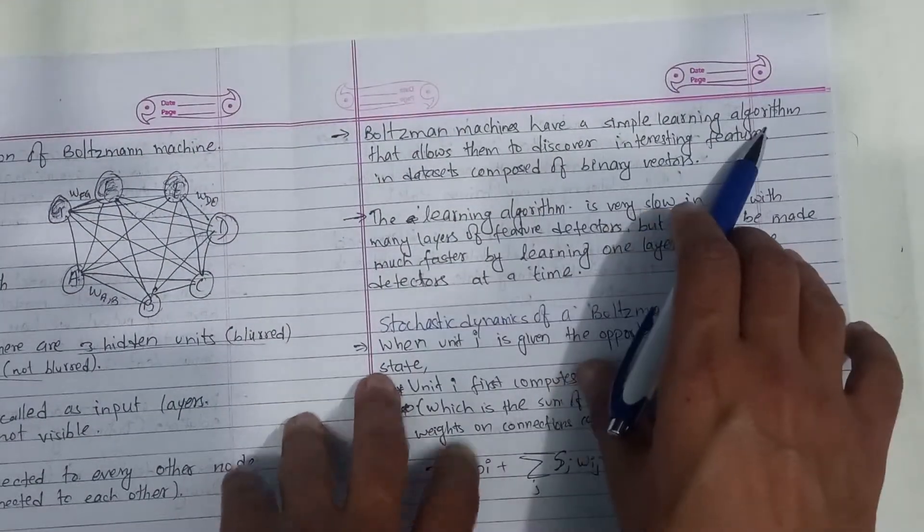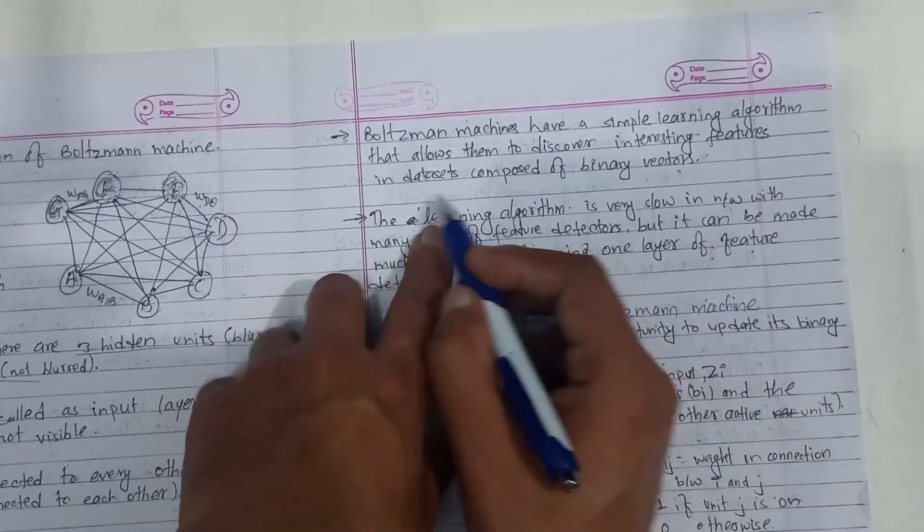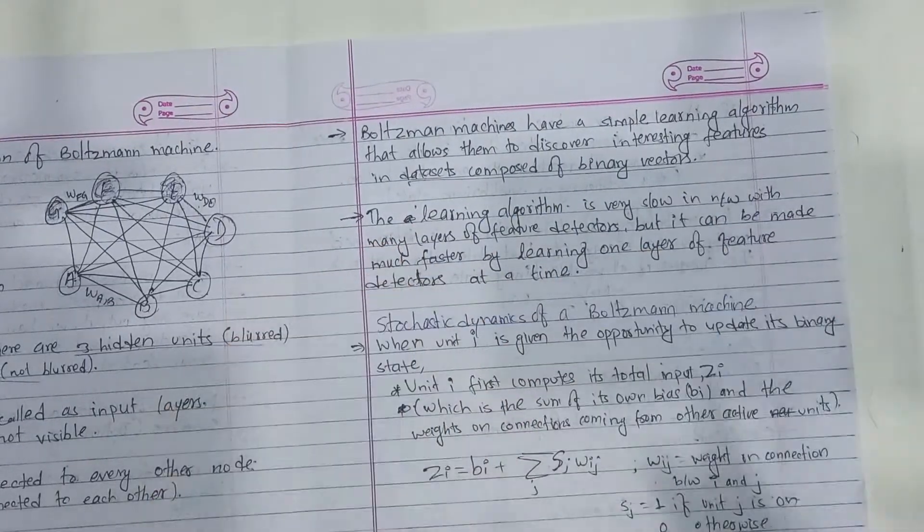These machines are mostly used in recommending systems. That is, the Boltzmann machine has a simple learning algorithm that allows them to discover interesting features in data sets composed of binary vectors.